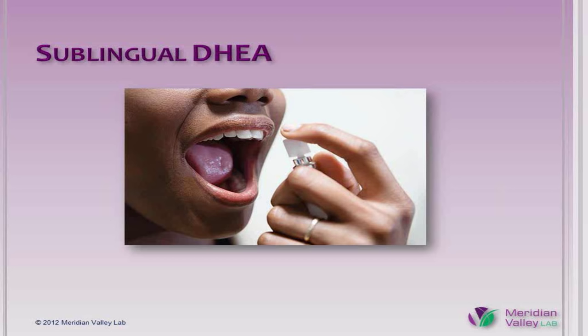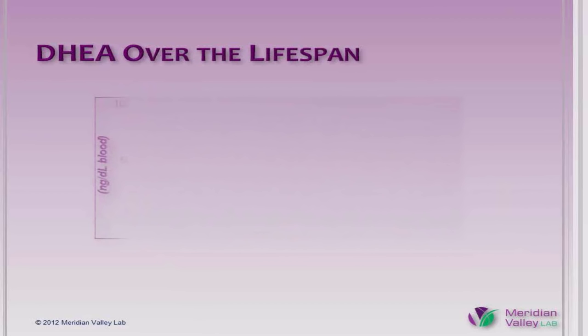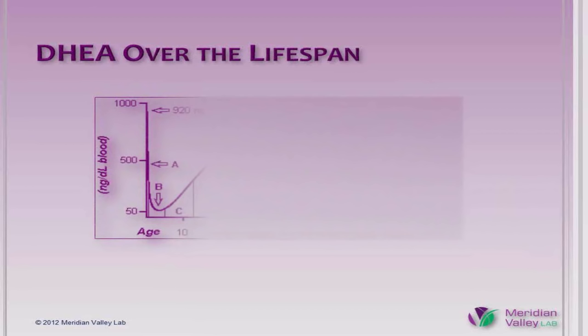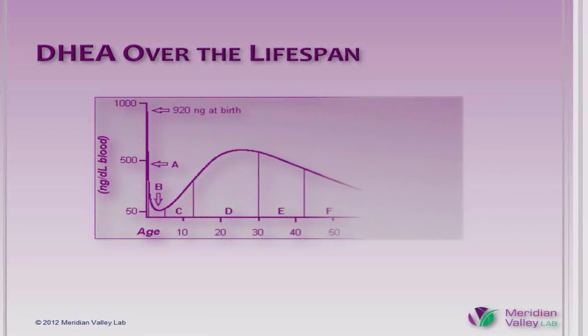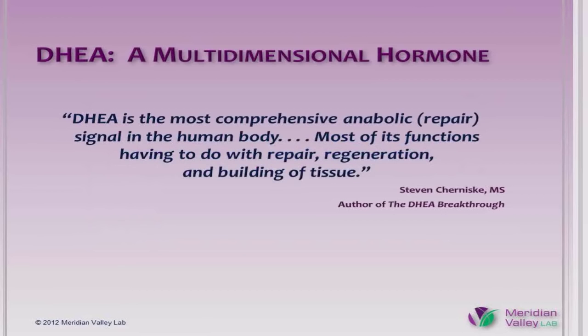DHEA is high at birth and declines precipitously to low levels in early childhood, starts to rise again in pre-puberty, and continues to climb until it peaks at the age of 20 to 25. By 30 it's starting to decline, and by 65 it's 20 to 25 percent of its peak. However, studies of healthy 80 to 100-year-olds indicate that these healthy elders maintain, without supplementation, unusually high levels when compared to the overall population of the same age. Stephen Chernisky, a researcher who wrote the DHEA Breakthrough back in the late 1990s, called DHEA the most comprehensive repair signal in the human body. It certainly makes sense that those healthy, active octogenarians and centenarians have relatively high levels of a hormone that supports repair, regeneration, and building of tissue.